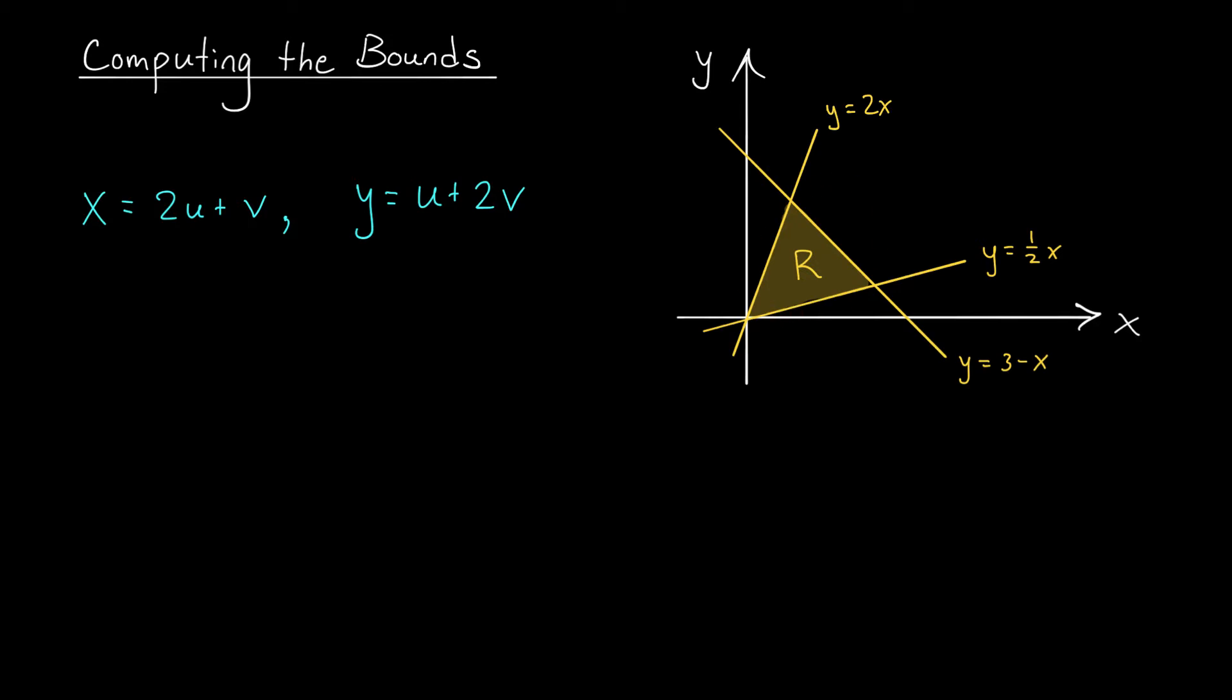This region is pretty gross. It's not type 1, it's not type 2. I don't really want to integrate over it. Hopefully it looks a little bit nicer after we've applied this transformation. To figure out the transformed region we need to see what these lines look like after we change x and y into u and v. So let's look at them one at a time. I'll start with the line y = 2x.